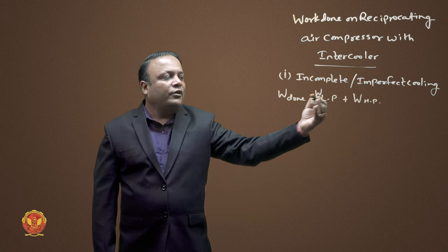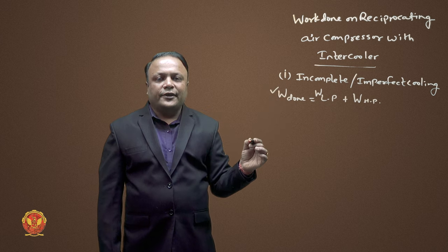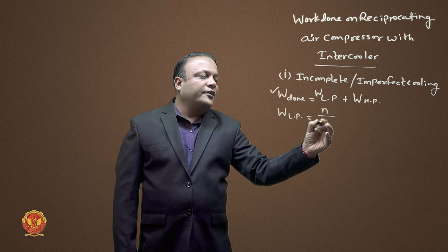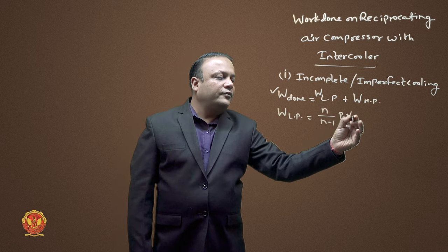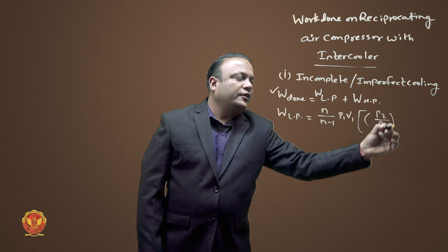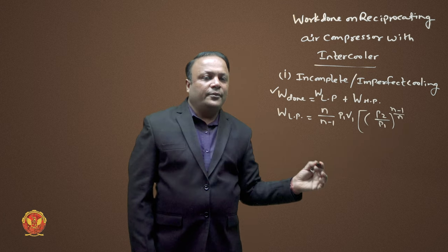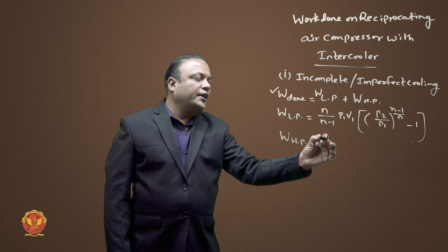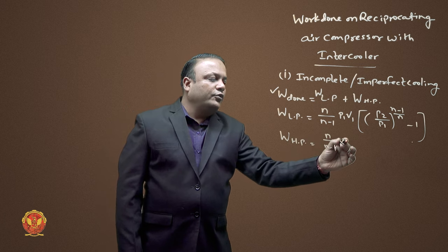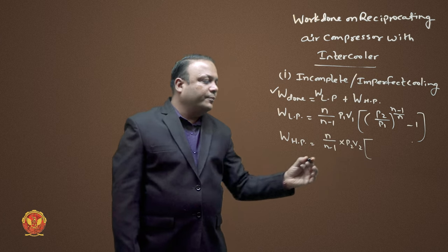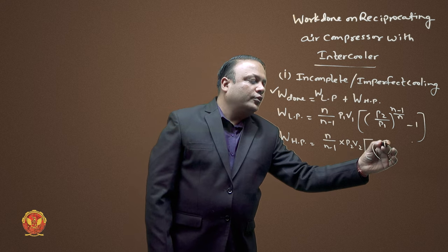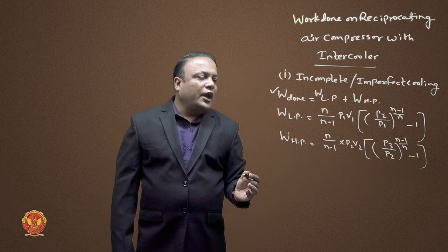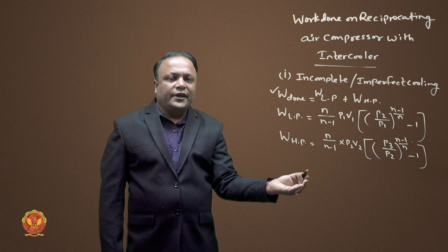LP cylinder work done is N/(N-1) × P1V1 × [(P2/P1)^((N-1)/N) − 1]. For HP cylinder, the bracket of pressure ratio will be P3/P2 to the power (N-1)/N, minus 1.